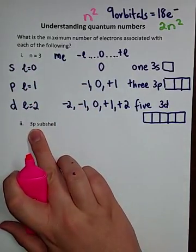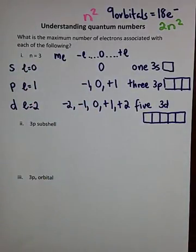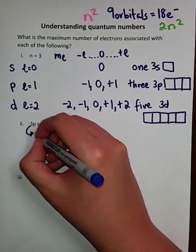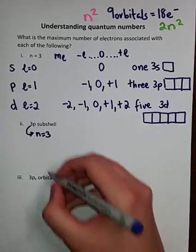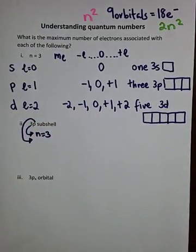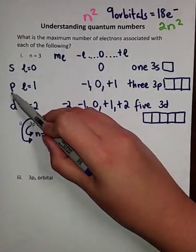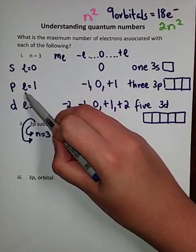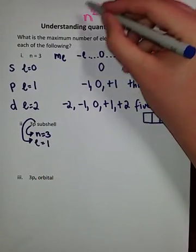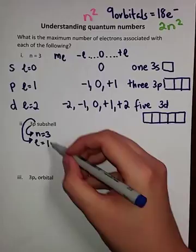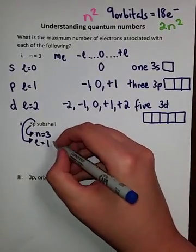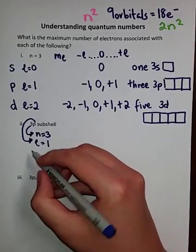In this case we no longer just have an n value. Have a look here. We've got n equals 3, but we've been given the fact that it's a p subshell. We know that for all p subshells l must equal 1. We can no longer use this formula because we've got more information. We're dealing with a p subshell, l equals 1.